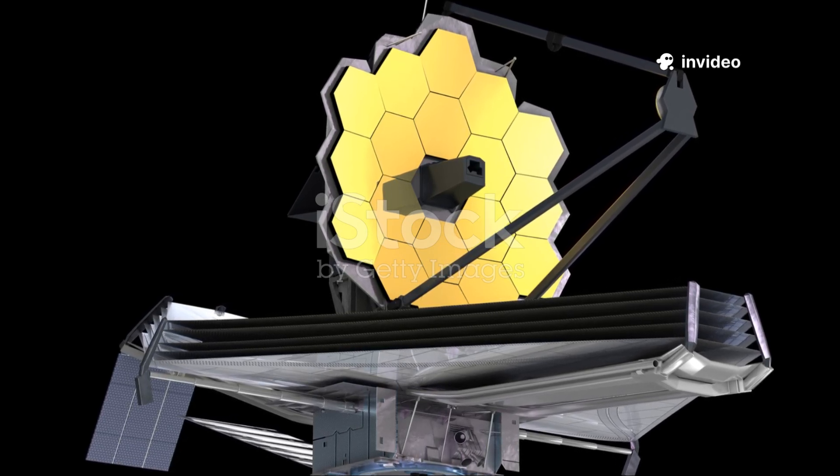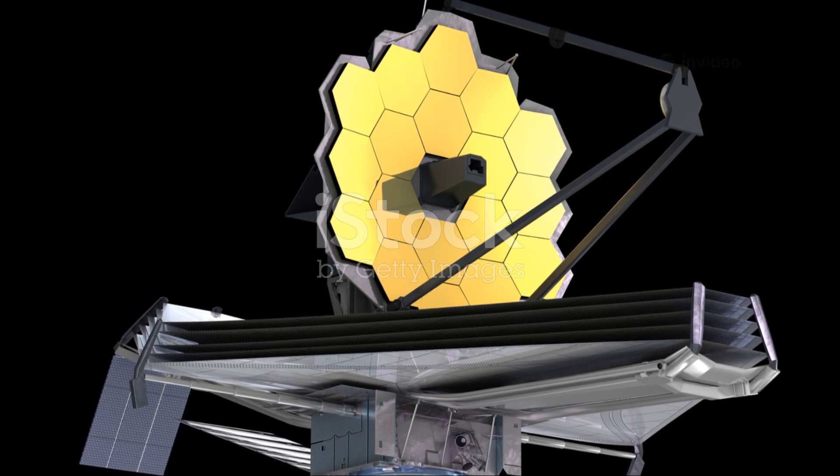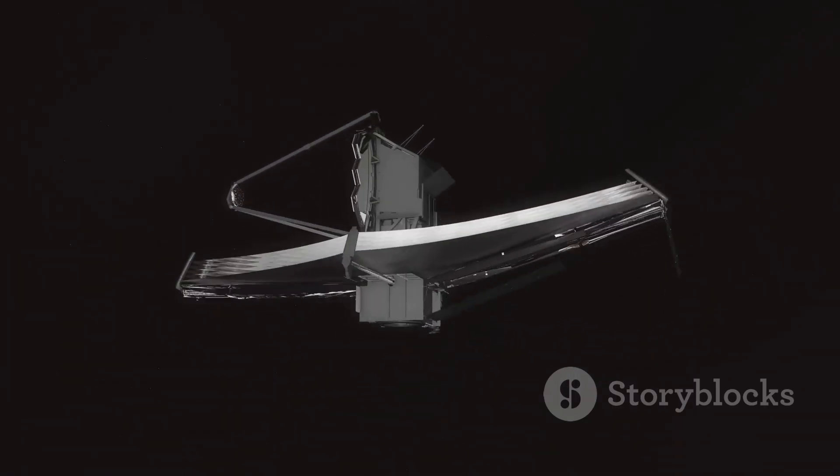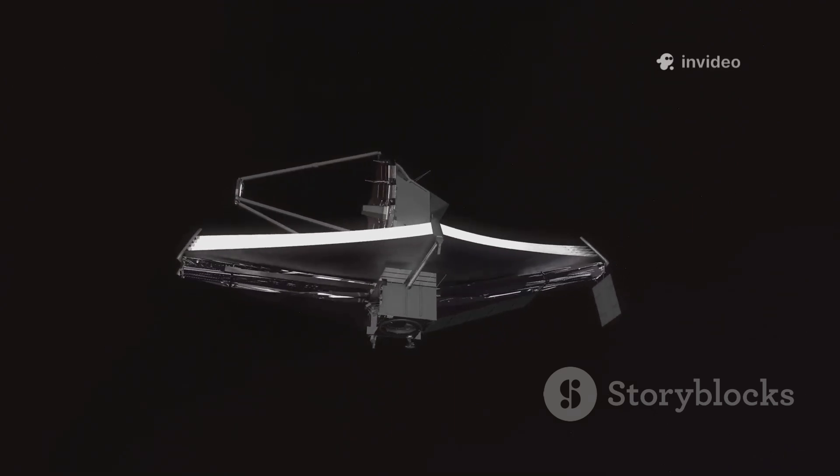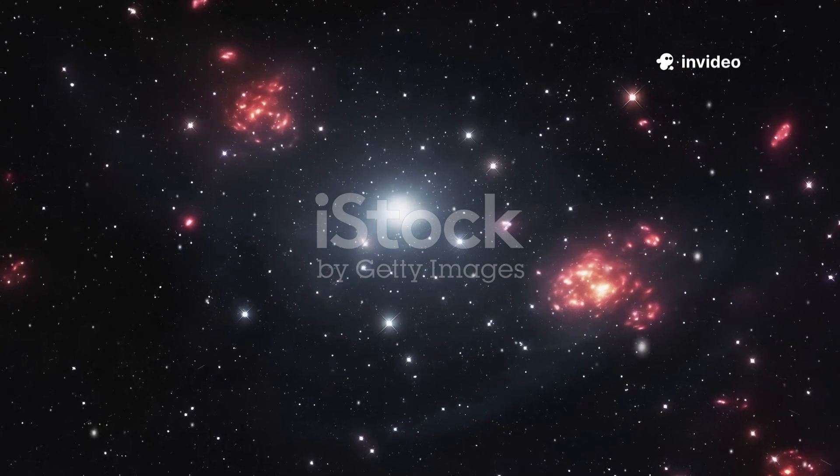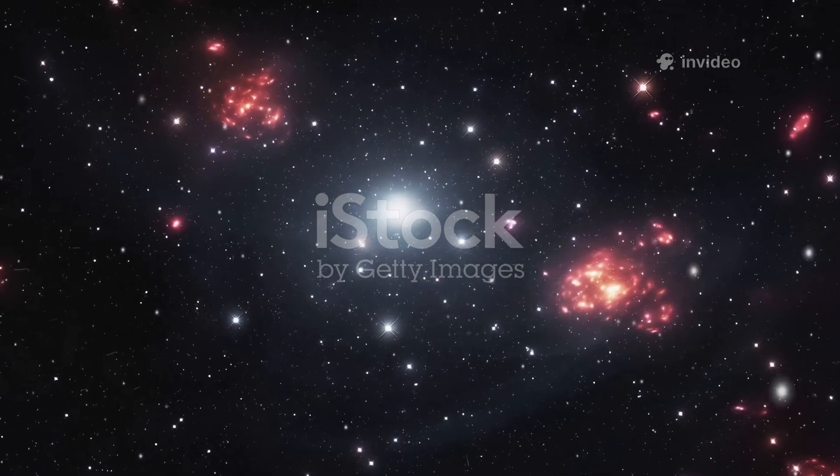It sees in infrared light, heat we can't see but can feel. As the universe expands, light from distant galaxies stretches into infrared, and Webb is designed to capture it. This lets us see the cosmic dawn, the birth of stars and galaxies.